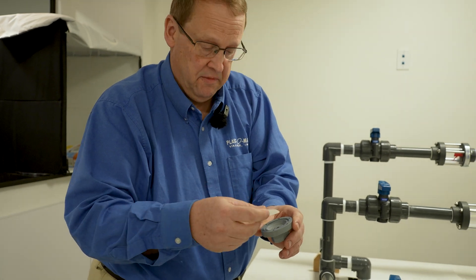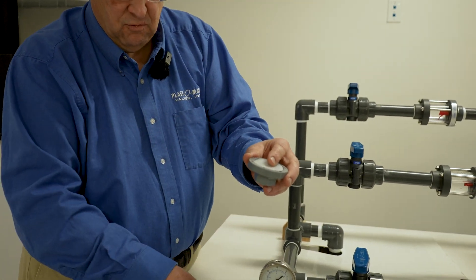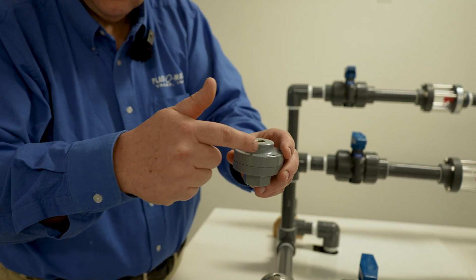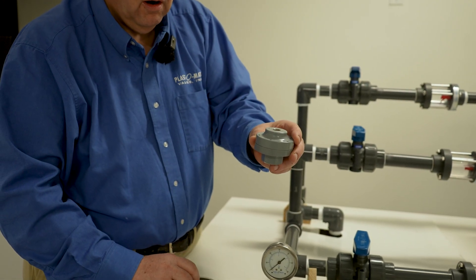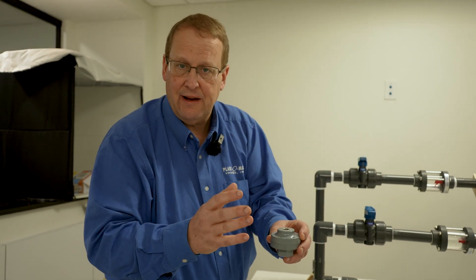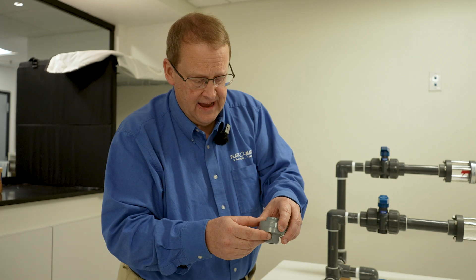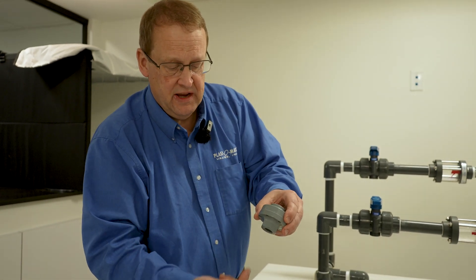The way it functions is the top half of this and the gauge Bordon tube are completely and thoroughly filled with liquid, usually mineral oil, and that then allows the diaphragm to transmit whatever pressure is on it right into the Bordon tube.